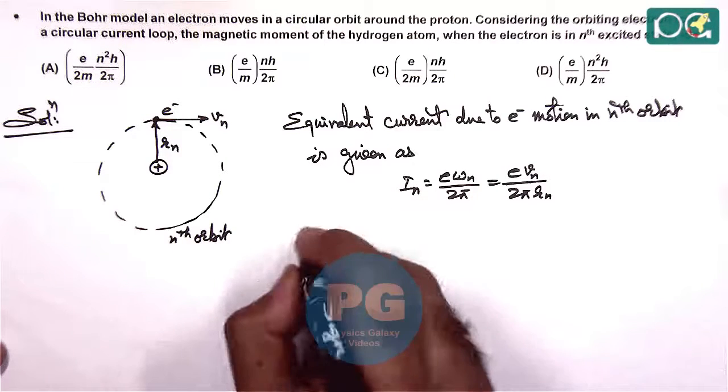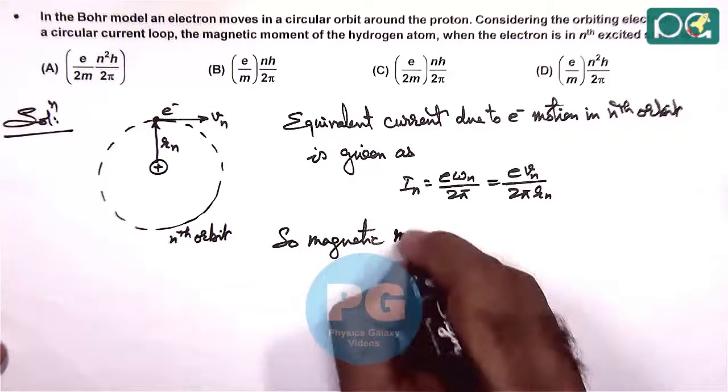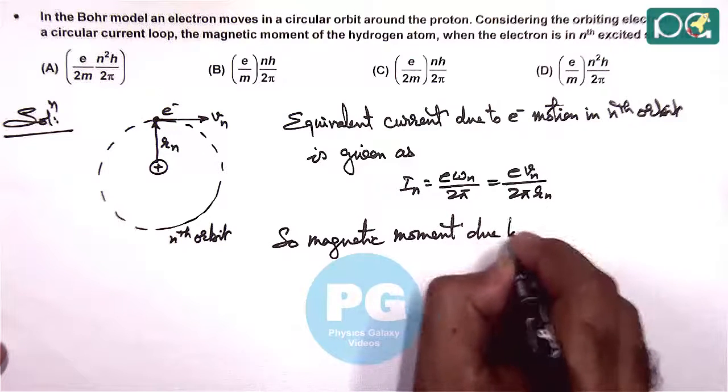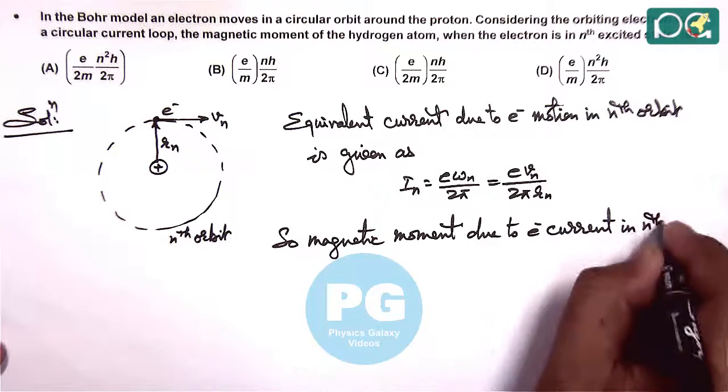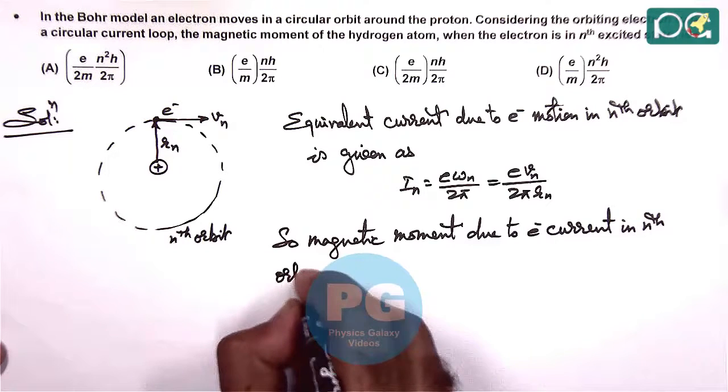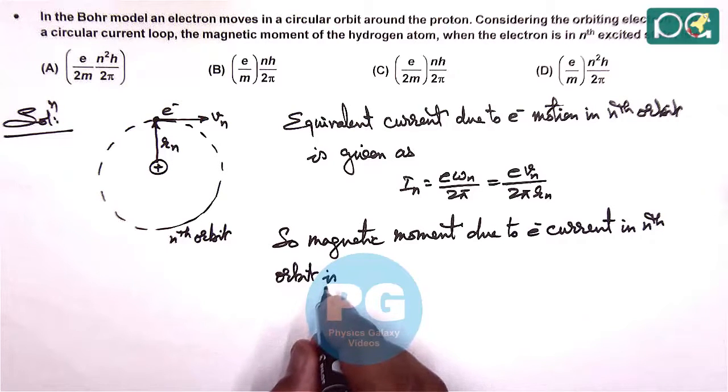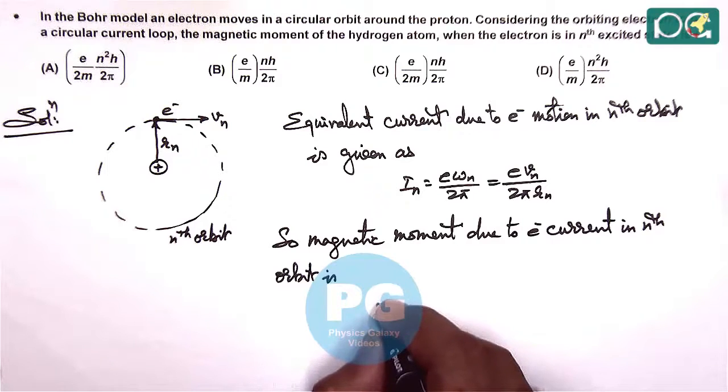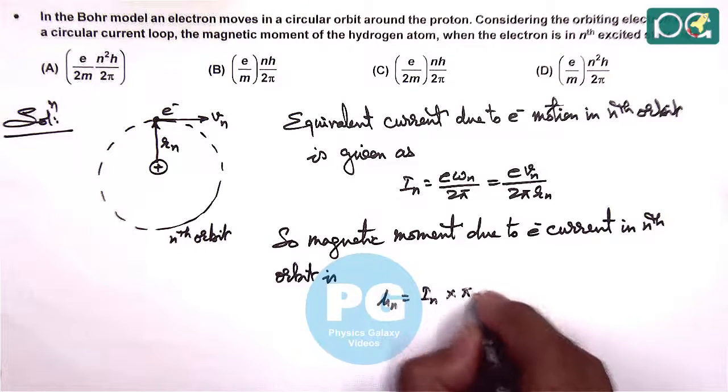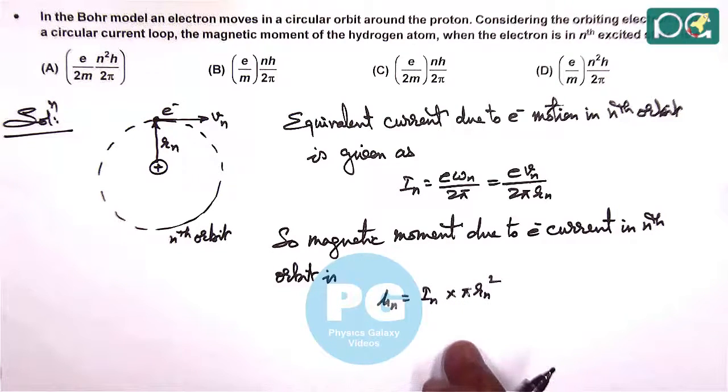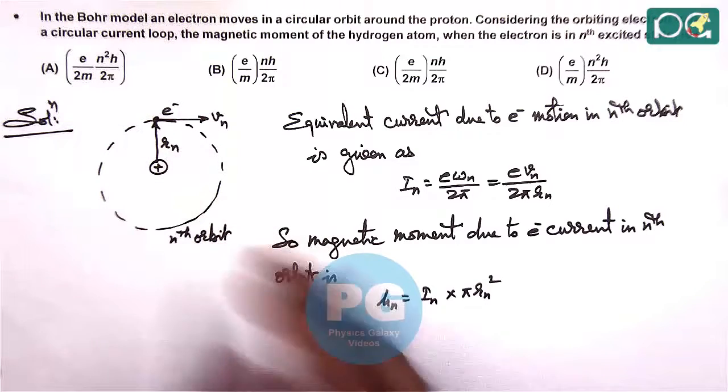As current is known we can calculate magnetic moment. The magnetic moment due to electron current in nth orbit is, for nth orbit we can write the magnetic moment is given as μn equals in multiplied by π rn square. That's what we use.